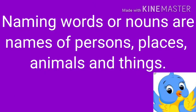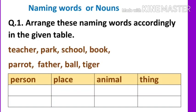Naming words or nouns are names of persons, places, animals and things. Hope you got well with the concept. Now children, arrange these naming words accordingly in the given table.